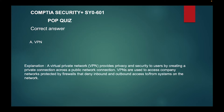The correct answer is A, VPN. A Virtual Private Network (VPN) provides privacy and security to users by creating a private connection across a public network. VPNs are used to access company networks protected by firewalls that deny inbound and outbound access to and from systems on the network.